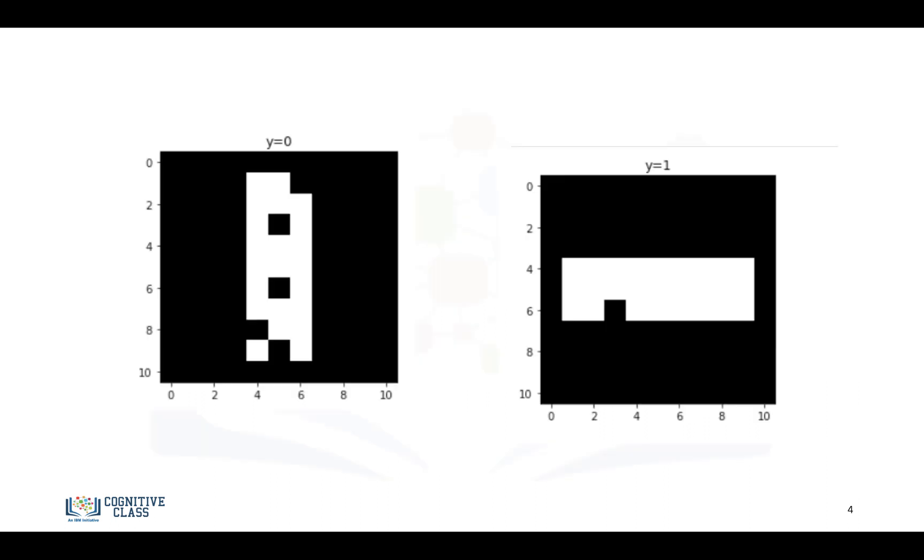So, let's start off with a really simple example, and this is the simplest example I can come up with. And we're going to try to distinguish between a horizontal line and a vertical line. The vertical line, y will equal 0, and the horizontal line, y will equal 1.